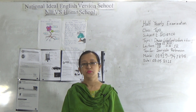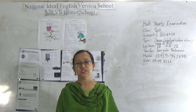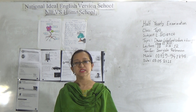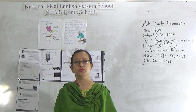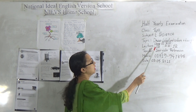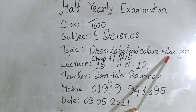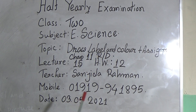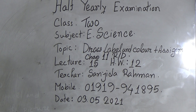Assalamu alaikum, my dear students. Hope you are all well by the grace of Almighty Allah. I am Shanti Dharman, assistant teacher of National Ideal English Version School. Welcome to our NIEDS home school. Today I am going to take a science class for the students of class 2. Our today's topic is: Draw, Label and Color Different Parts of Plants, and discussion of assignment and chapter 11 reading. Our lecture number 15 and homework number 12.